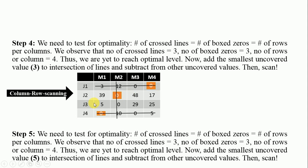We generated this from the column-row scanning table to have this as our first iteration table. We also continue with the scanning on it, and this is the result after we have done the column-row scanning. We observe that we still have three boxed zeros and three crossed lines, but the number of rows or columns is four, so we have not yet reached the optimal level. We continue to make another iteration table.